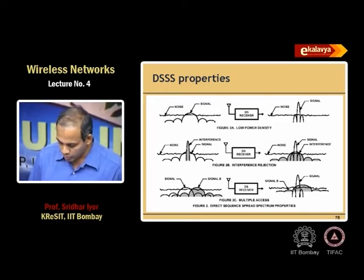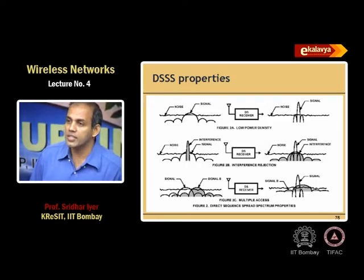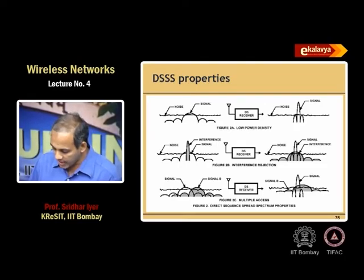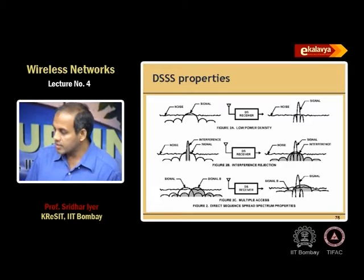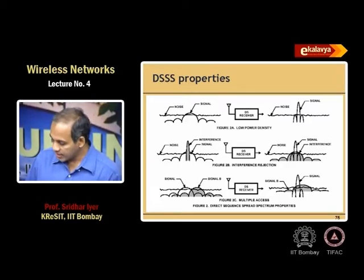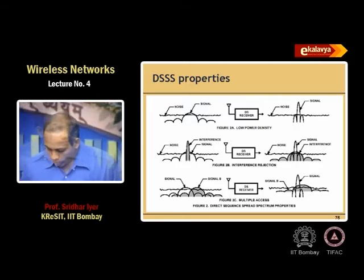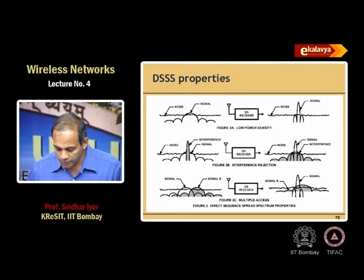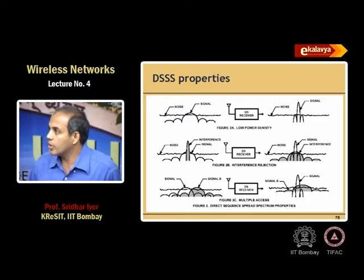There is a bunch of noise and the signal together, and there is very little difference between the signal and the noise as far as the wireless medium is concerned. When you XOR again with the spreading sequence, the property is such that the signal is recovered whereas the XOR of the noise with the spreading sequence remains as noise. That is the key property being exploited.